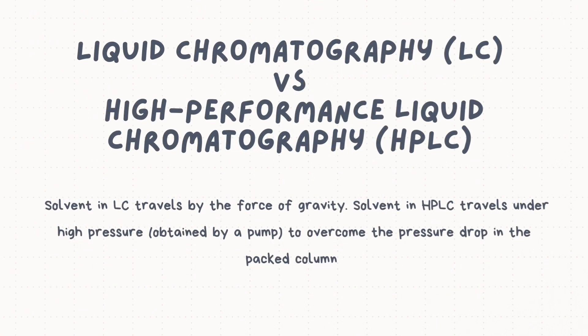HPLC is more advanced than traditional liquid chromatography. The main difference is that in traditional LC, the solvent travels by the force of gravity, while in HPLC, the solvent travels under high pressure obtained by a pump to overcome the pressure drop in the packed column, which reduces the time of separation. The component with the highest affinity takes more time to travel to the end of the column and is therefore the last to separate.